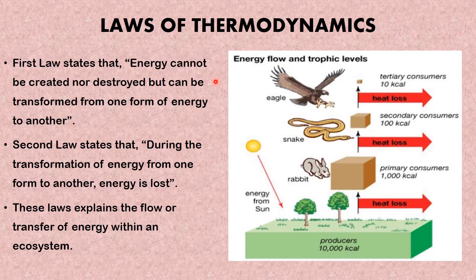Some of this energy does not get consumed — few organisms eat an entire organism — and the majority of the energy an organism receives is lost as heat through respiration as organisms move and carry out other life processes. The transformation of energy in nature is explained using the laws of thermodynamics. The first law states that energy cannot be created or destroyed but can be transformed from one form of energy to another. Energy from the sun is transformed into chemical energy through photosynthesis by green plants, and through respiration chemical energy is transformed into heat energy.